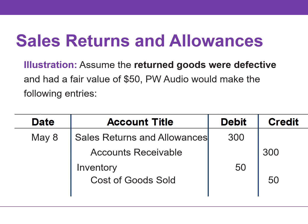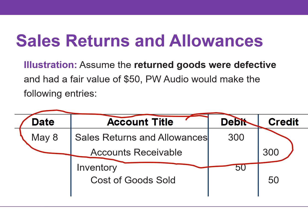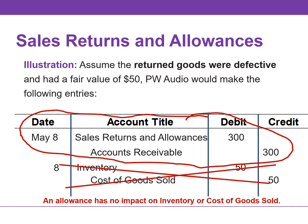If the goods were not returned, but instead the seller granted the buyer an allowance by reducing the purchase price, the seller would debit sales returns and allowances and credit accounts receivable for the amount of the allowance. An allowance has no impact on inventory or cost of goods sold.